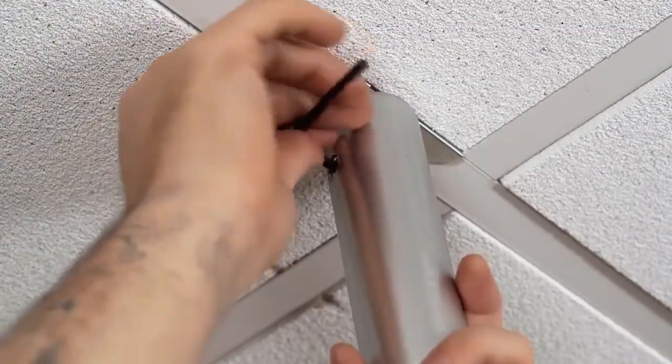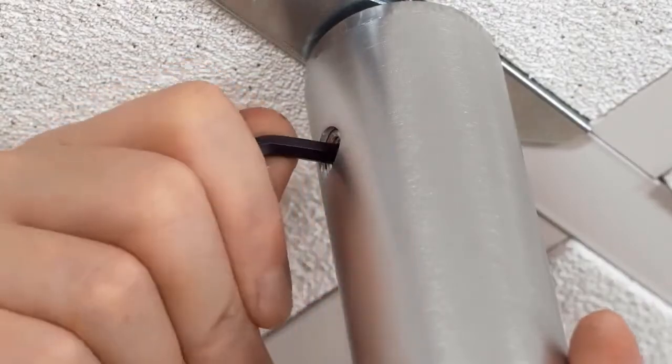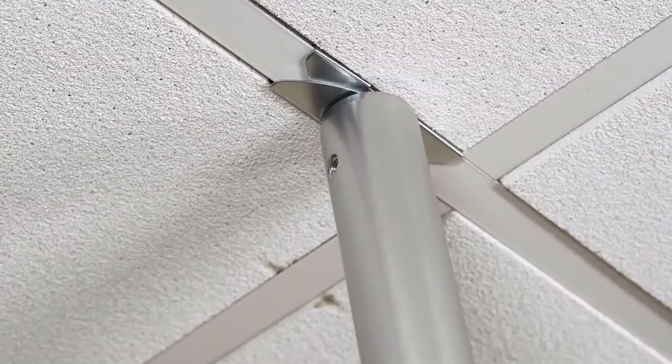Use a 4mm Allen key to secure the adapter in place via the access hole in the top of a Kupole.